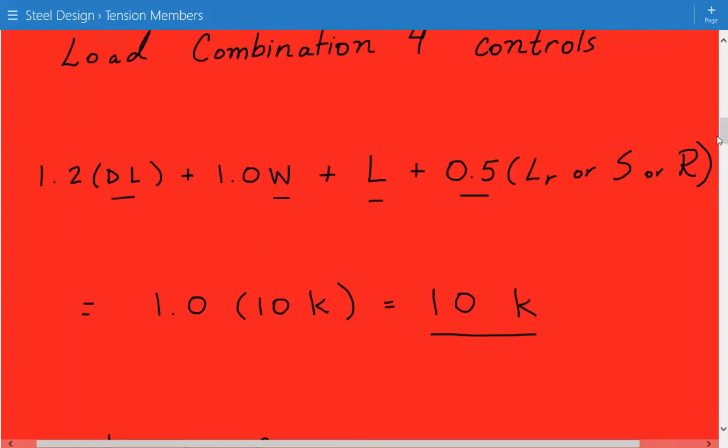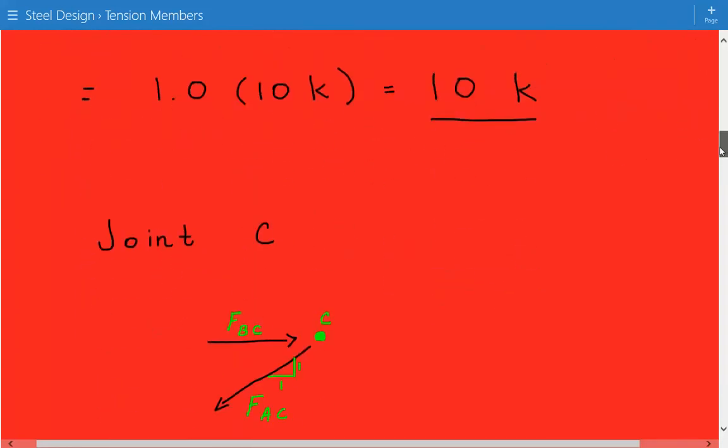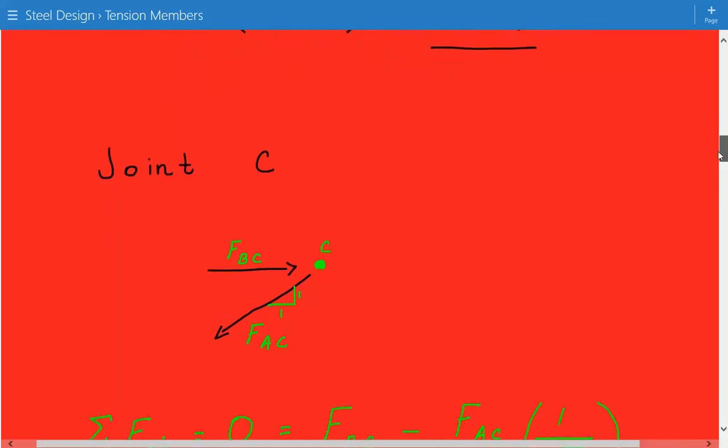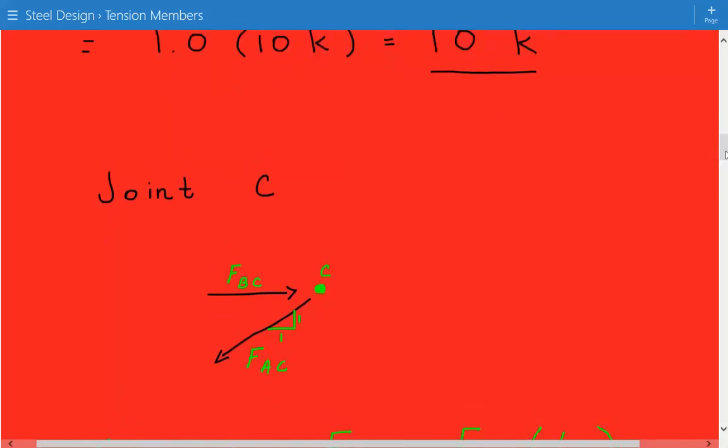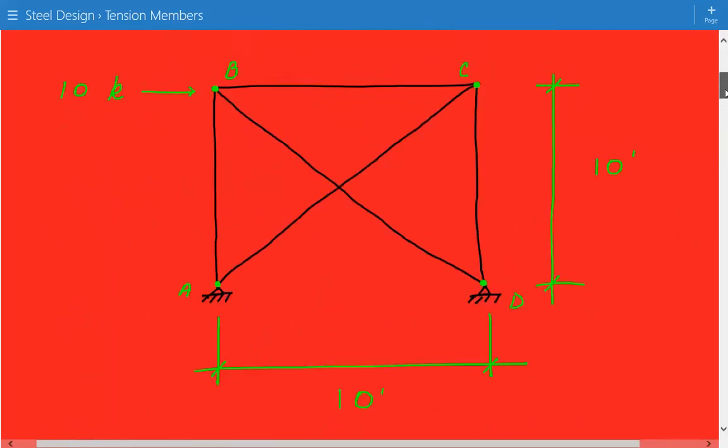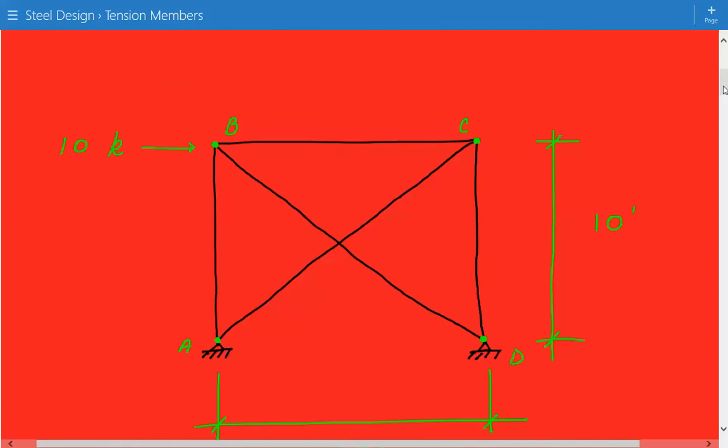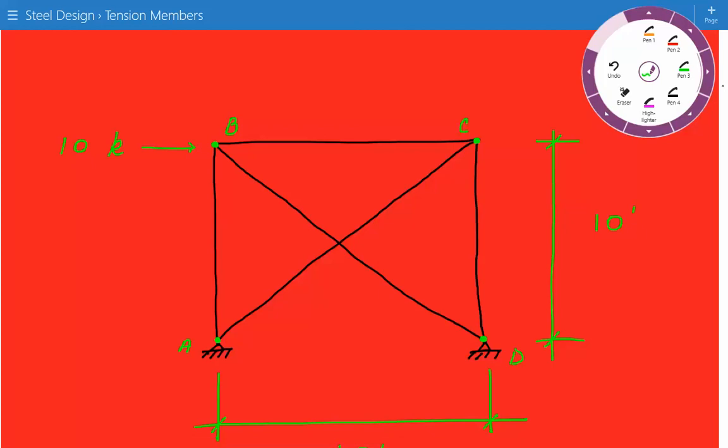So the next step is to calculate the tensile force in the brace AC. To do this, we need to isolate joint C and do the method of joints on joint C and do static calculation. But before that, let's go back to our figure here and let's first take a look at joint B. So here at joint B, we have this horizontal wind force. And first of all, this is a pin-connected structure, meaning that all members in this structure can take either compression or tension.